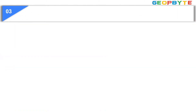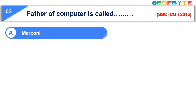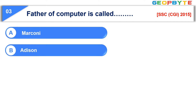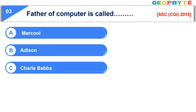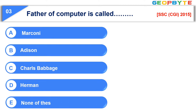Moving to question number three. Father of computer is called. Option A: Marconi. Option B: Addison. Option C: Charles Babbage. Option D: Herbman. Option E: None of these. The correct answer is option C, Charles Babbage.